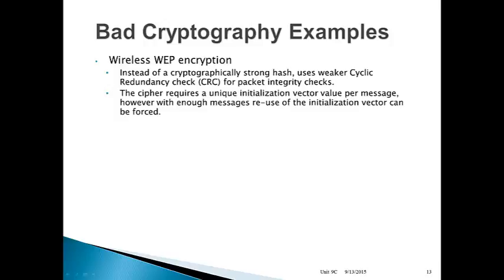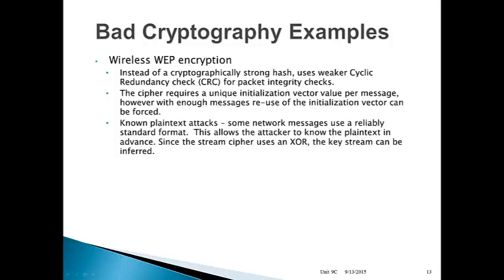The cipher WEP uses requires a unique initialization vector value per message. However, with enough messages you can force reuse of the initialization vector. If you force reuse, it becomes very easy to break the cryptography because the initialization vector adds randomness in addition to the key — if you lose that randomness, it's a much weaker cipher. And then lastly, there are known plaintext attacks. Certain network messages use a reliable standard format, like an ARP message, which is very common in wireless networks. The attacker knows the plaintext in advance and can get the key stream — you take the message, determine it's got to be an ARP message, use a logical bitwise XOR of the ciphertext with what you know the message to be, and now you've got the key stream. You don't have the key, but you've got the key stream, and that helps you break the message.